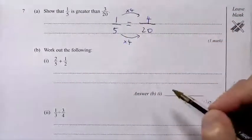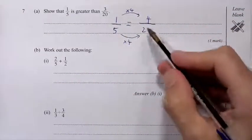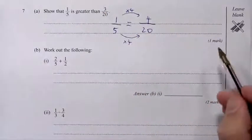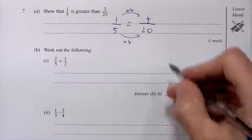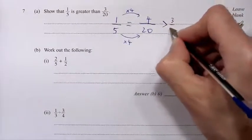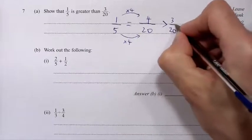So 1 fifth and 4 20ths are the same. And 4 20ths is obviously greater than 3 20ths. So that's enough for our 1 mark. But if you want to be really fancy, you can put is greater than 3 20ths. Just to ram it home.